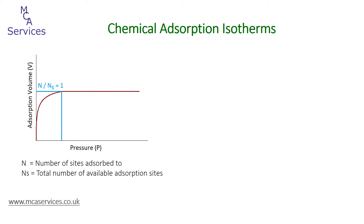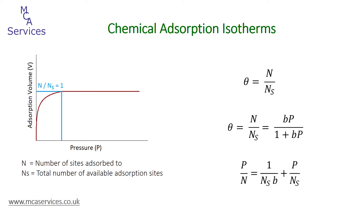The Langmuir isotherm shows that at a certain pressure, all of the available sites (NS) are adsorbed to N, in which case N/NS equals 1. At higher pressures, the isotherm is flat relative to the pressure axis, as no more adsorption sites are unoccupied, and from this point we can derive the monolayer volume. In terms of fractional coverage, the Langmuir equation can be written as: theta equals N/NS, which is also equal to BP / (1 + BP), where P is pressure and B is the coefficient of adsorption, which accounts for the heat of adsorption. Rearranging gives a plot of P over N, and providing the adsorption conforms to the Langmuir model, this will give a linear plot with a slope equal to NS.